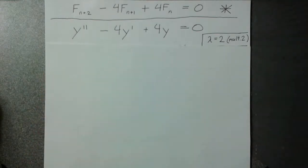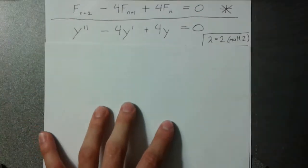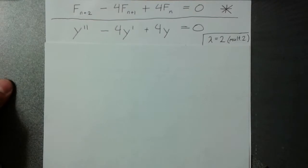So here would be the differential equation that looks exactly the same. Both of these have a repeated root of 2. And so the idea is we just take the differential equation and find out a way that it will tell us what the solution to the recurrence relation is.